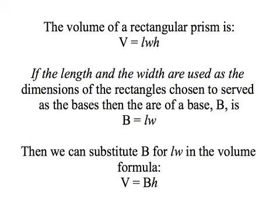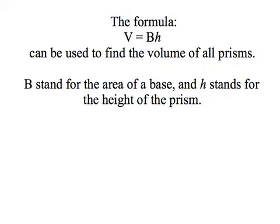We can substitute capital B for LW in the volume formula so that the volume of a rectangular prism is the area of the base times the height. That formula can then be used to find the volume of all prisms: B stands for the area of the base and H stands for the height. So on a triangular prism, capital B is the area of a triangle; for the hexagonal prism, it would be the area of a hexagon.